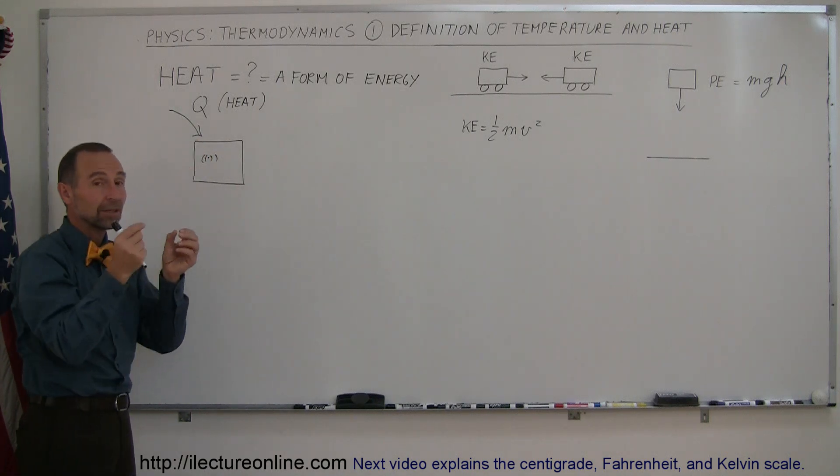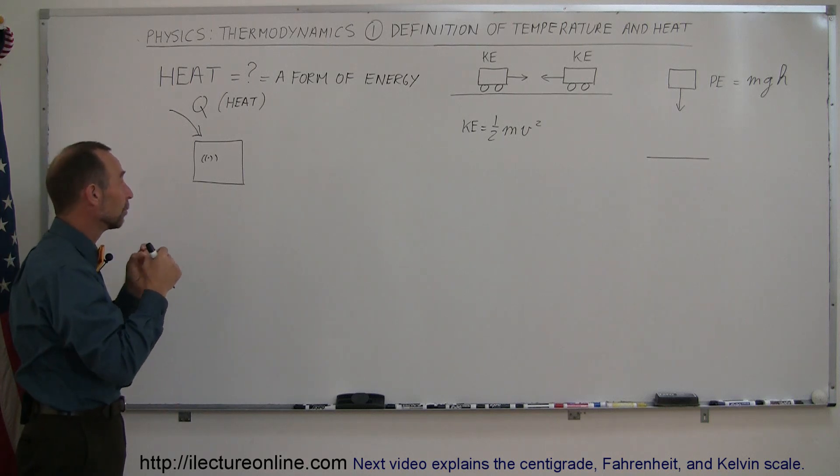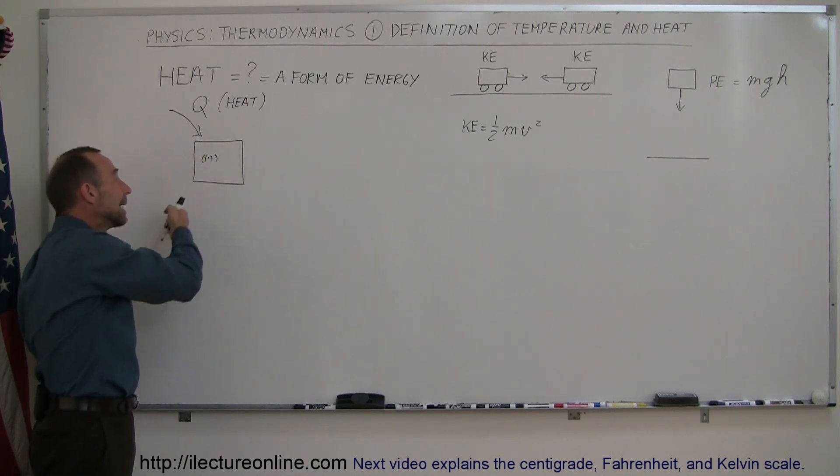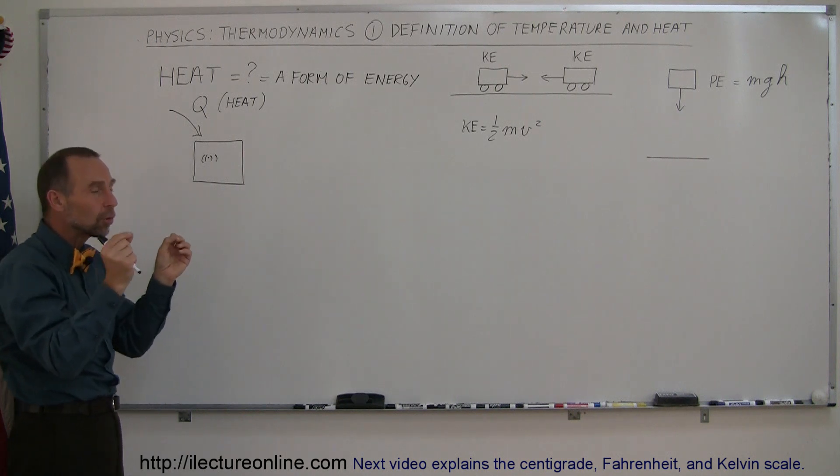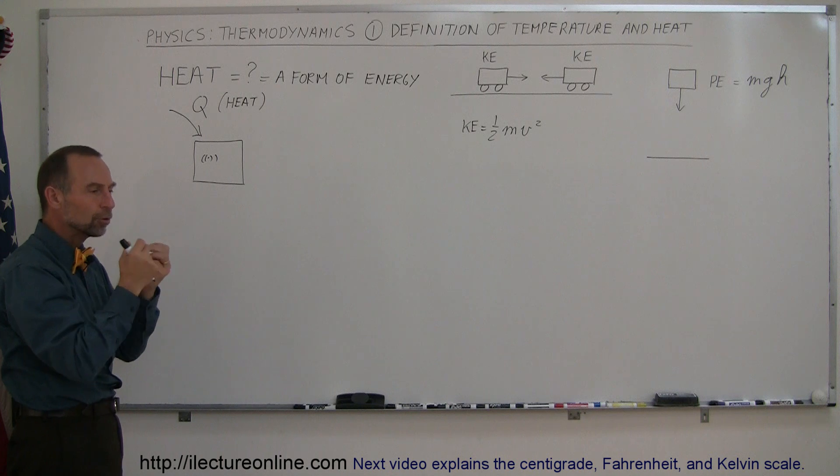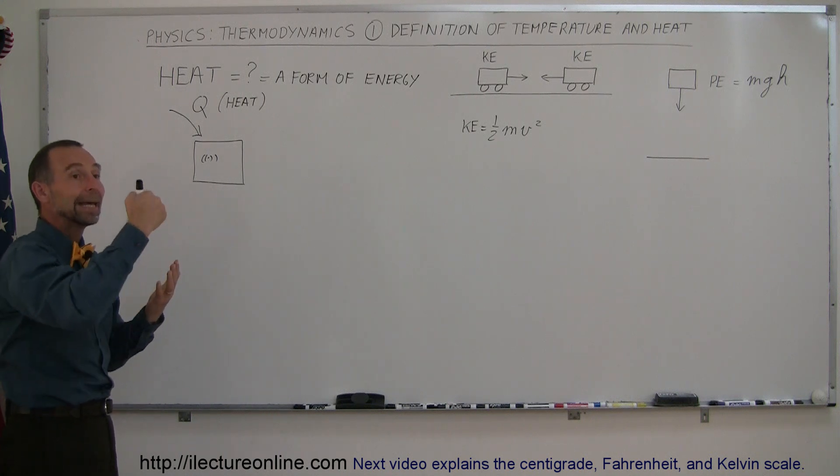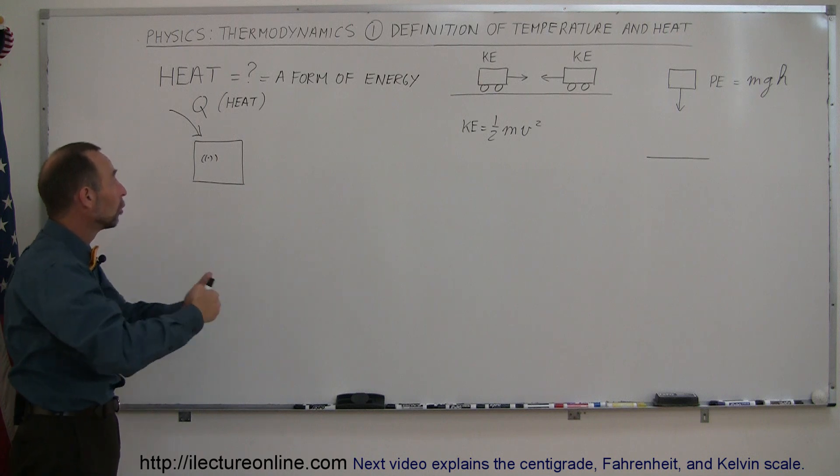If we add more heat to the object, the atoms will vibrate faster and harder and more quickly. And if we take heat away, then the object will begin to slow down and vibrate at a slower frequency. So the amplitude of vibrations and the frequency of vibrations is the way in which the object can take on more heat or lose heat.